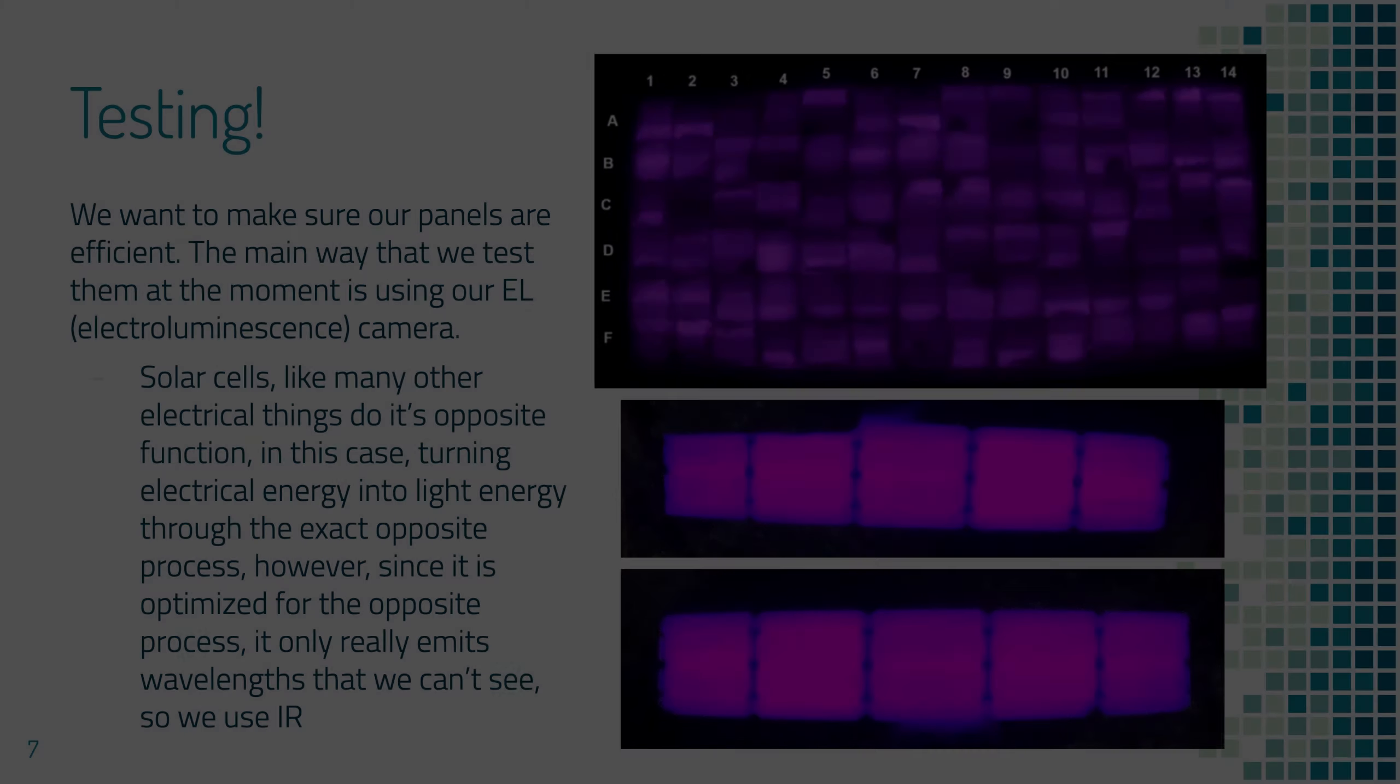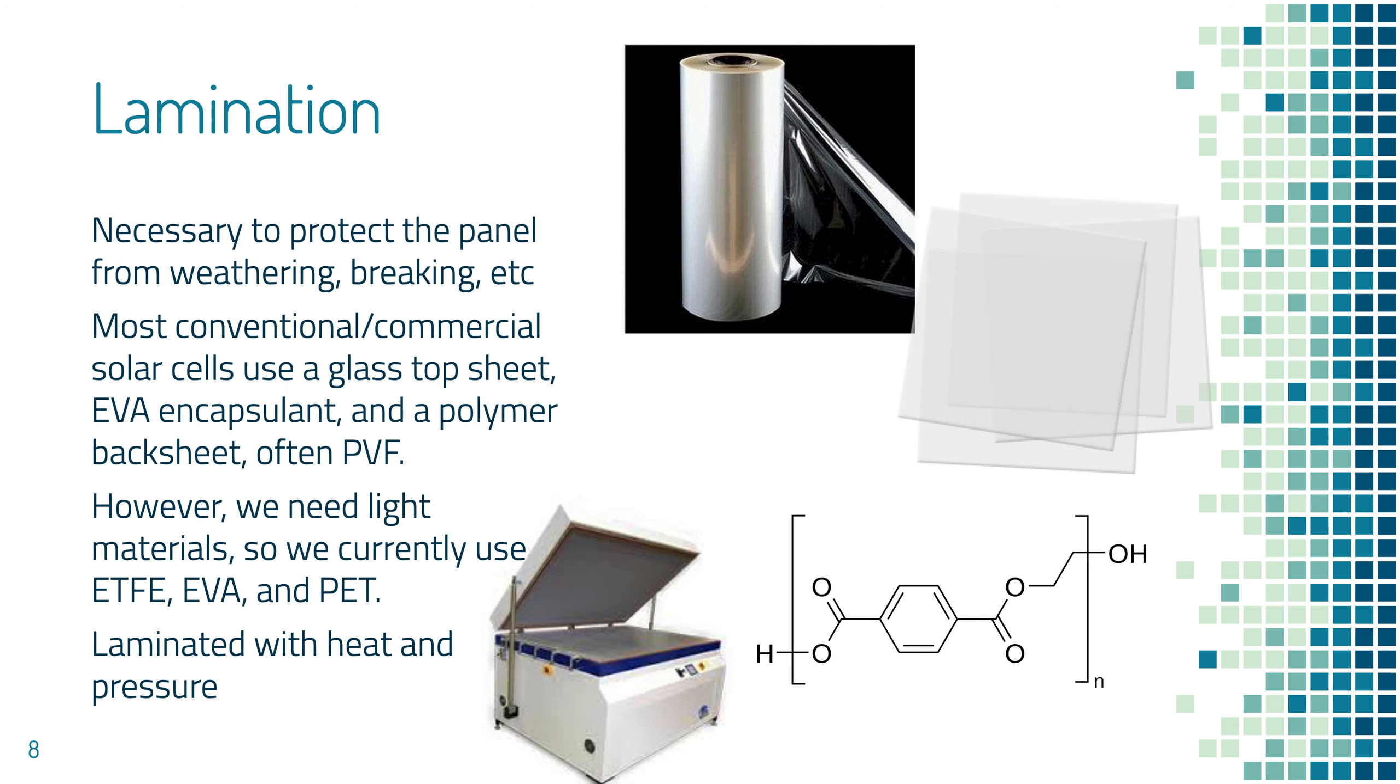Once we've done that and we know that these panels are decent, we have to laminate them because without lamination, they'd be incredibly fragile. They'd weather and die very quickly. Most conventional or commercial solar panels have a glass top sheet, EVA encapsulant, and a polymer back sheet. However, glass is heavy, so we need to use something else. So we use ETFE, EVA, and PET.